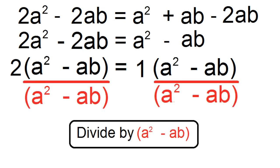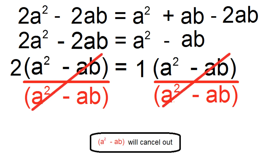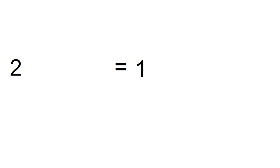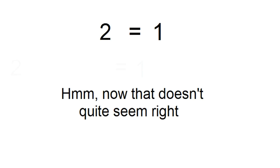Finally, let's divide both sides by A squared minus AB. This in turn removes A squared minus AB from both sides of the equation. And what do we have left? 2 is equal to 1.